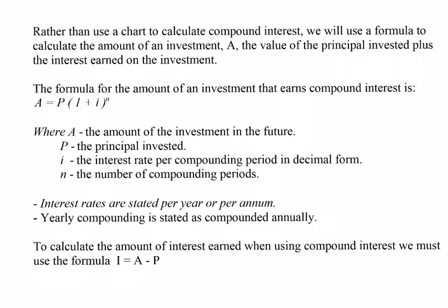Now we're going to use the exponential equation for compound interest, where A represents the amount of the future investment — how much it will be worth in the future. P represents the principal invested, the starting amount of money put in. I represents the interest rate per year, and N represents the number of compounding periods.